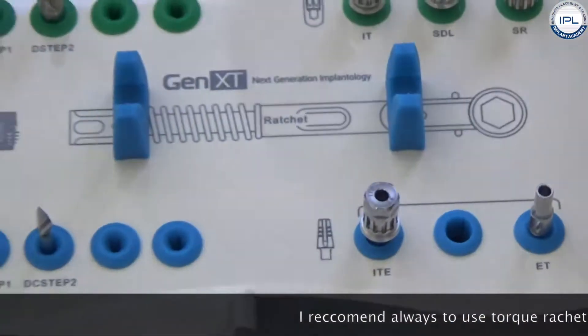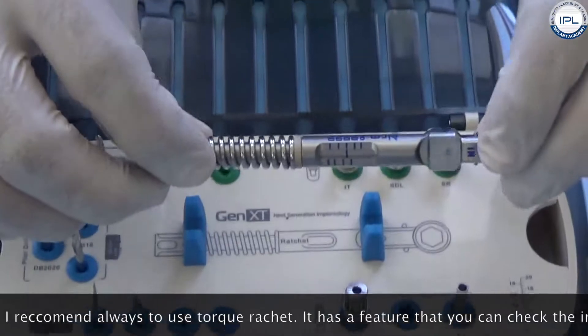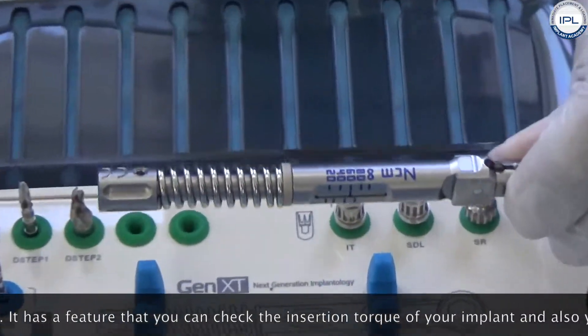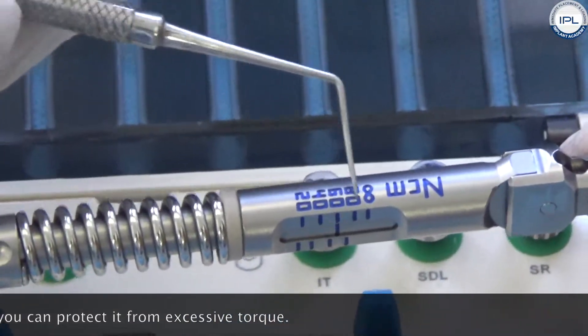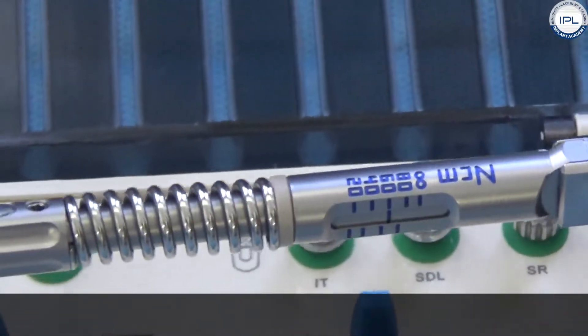As I said, I recommend always to use the torque ratchet. The torque ratchet has a feature that you can check the insertion torque of your implant and you can also protect it from excessive torque. So this is the handle over here.